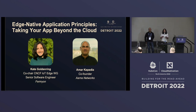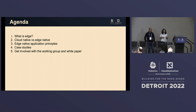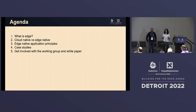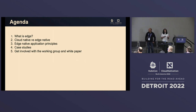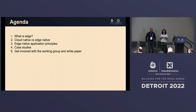The CNCF IoT Edge Working Group wanted to work together to find what does the word 'edge native' mean. We know what cloud native means, but what does edge native mean? We're going to walk through the process that culminated in nine edge native application principles that we put out a white paper around. We started by defining what is edge, then went through cloud native versus edge native differences and similarities, leading to our nine edge native application principles and some case studies.